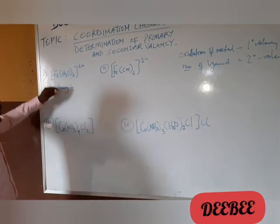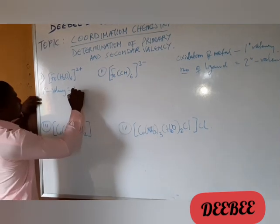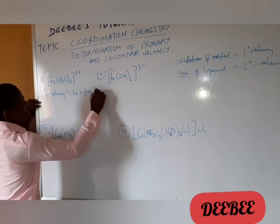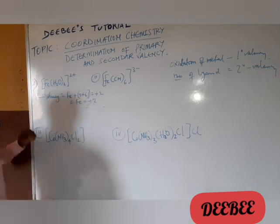We have, because we have H2O times 6. So 0 times 6 is 0. So what you have left, that is, you have Fe plus 0 times 6 equals 2. So from there, Fe equals plus 2. This is the primary valence.